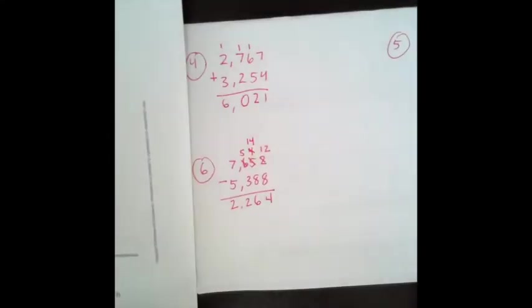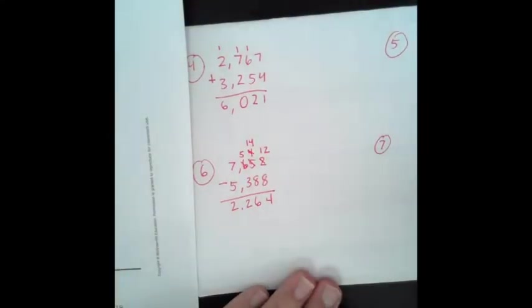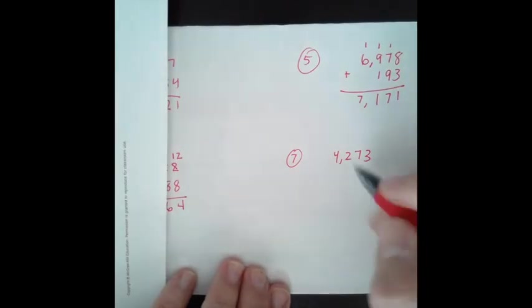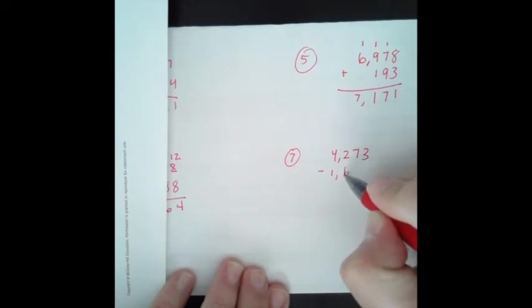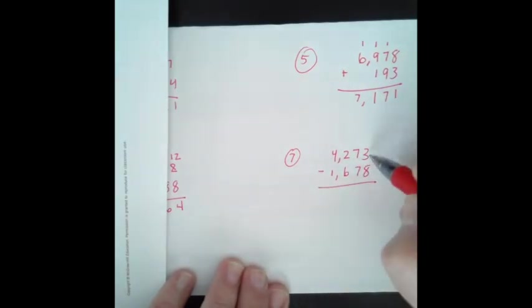And the last one is problem 7. 4,273. I'm going to slide over here. 4,273 take away 1,678. Start with our 1s place. 3 take away 8. We are not able to do that. So we are going to trade. We are going to trade one of these 10s, make that a 6. We are going to add the 10 ones to the 3 that are already there. That's 13. 13 take away 8 is 5.